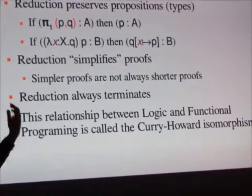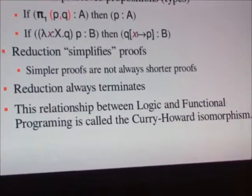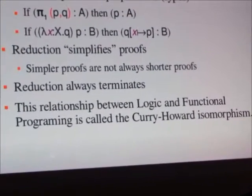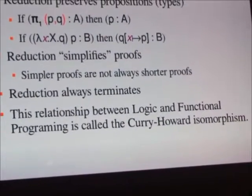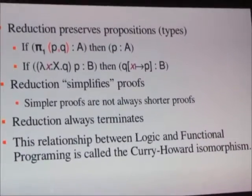So that can actually greatly increase the size of the tree. How do you verify that the reduction preserves propositions? Like, are you introducing that as an axiom, or is that just verified by going through the rules?